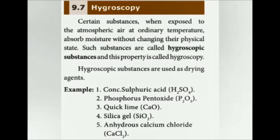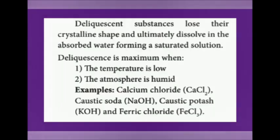What is a hygroscopic substance? Certain substances, when kept in atmospheric air, absorb moisture without changing their physical state — that is, without dissolving. Those substances are called hygroscopic substances, and the property is called hygroscopic. Examples: sulfuric acid, quick lime, silica gel, phosphorus pentoxide.